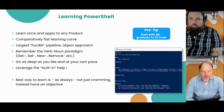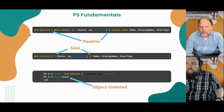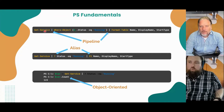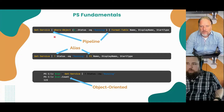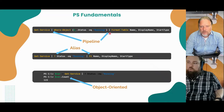Here we're doing a get-service, which fetches the Windows services on any Windows machine. Then we're piping the output of get-service — which returns all the Windows services — through a where-object command with a criteria of status equals 'running', so we're whittling that down to just the ones that are running. Then once again we're piping it out to a format-table command that gives us a table with selected properties shown.